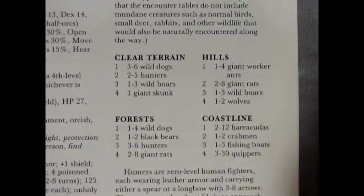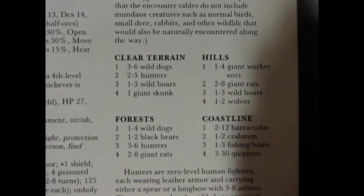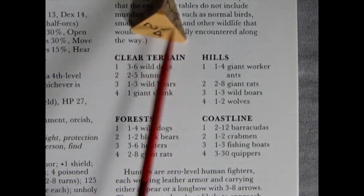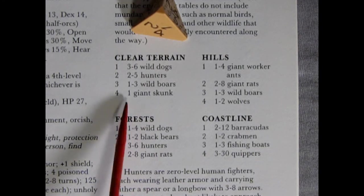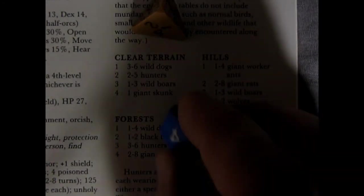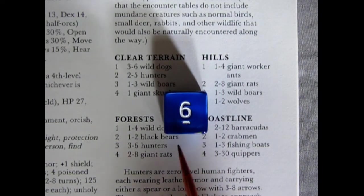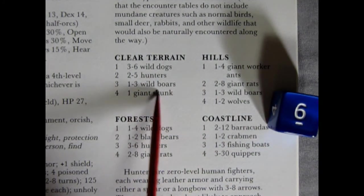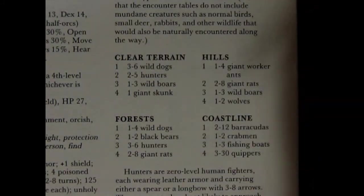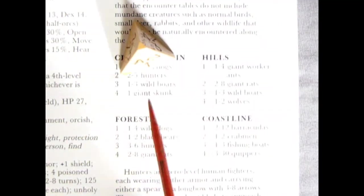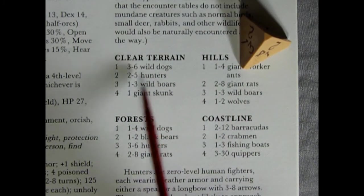And so they have four different types of encounters you could have for each of these different terrain areas. So for example, you would start, let's say they went through the clear terrain. So you're going to roll your d4, and we find that the value here is four. So they meet one giant skunk, which is pretty obvious. Here we have one to three wild boars. So what that would be is, you take your d6, and you essentially divide it by two. So one and two equals one, three and four equal two, and five and six equal three. So that's pretty easy to figure out.